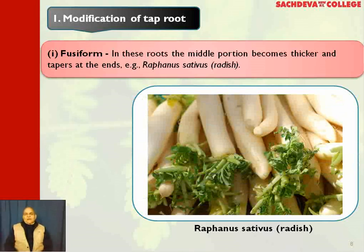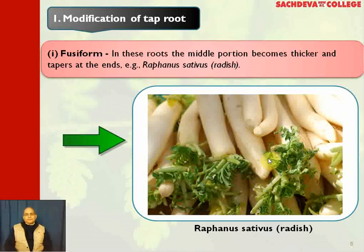Number one is fusiform. In these roots, the middle portion becomes thicker and tapers at both ends. An example is radish. It is a fusiform root. The botanical name is Raphanus sativus. People consider radish to be good for the liver.